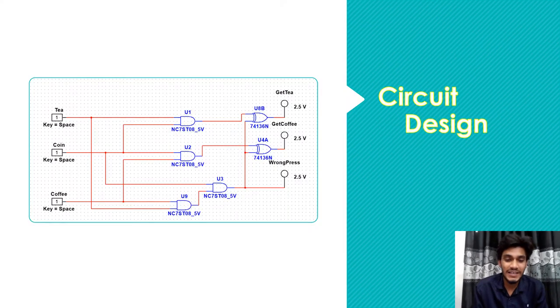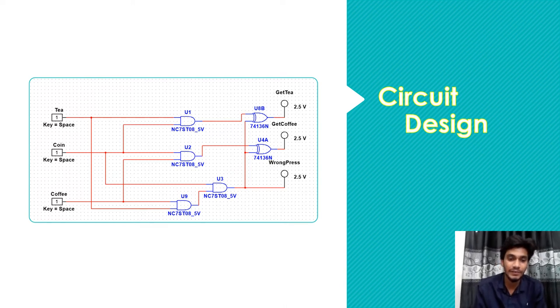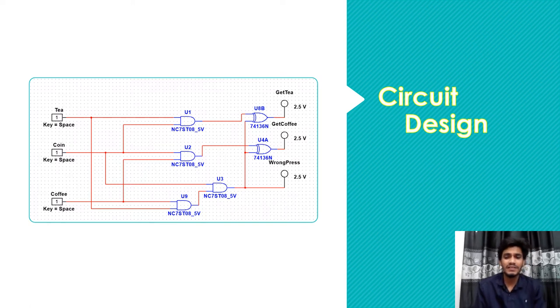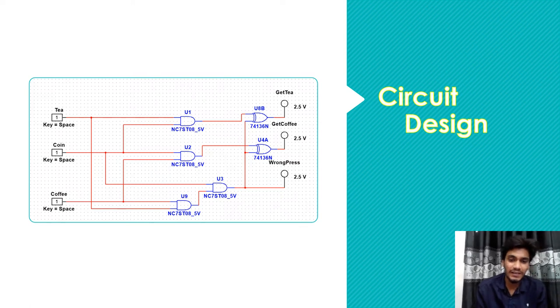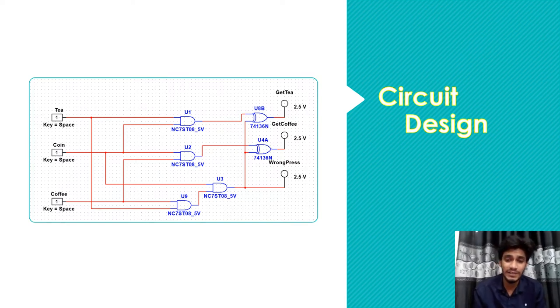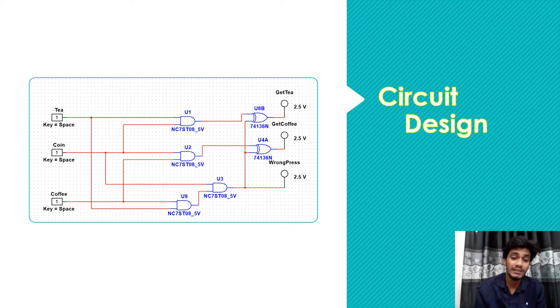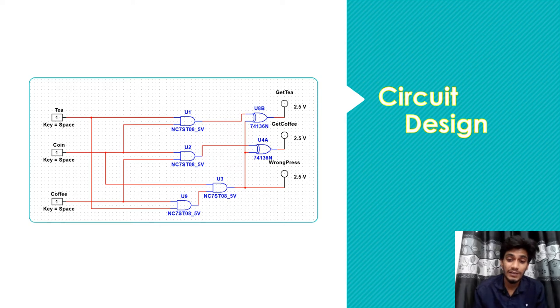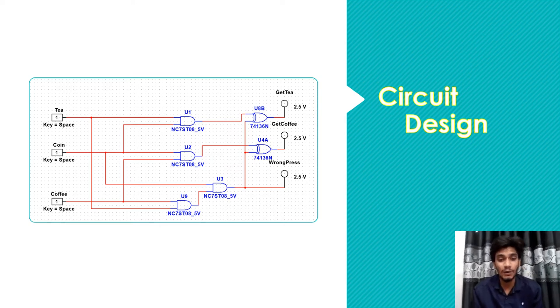I am Yamatur Hussain Al Amin and now I will describe the circuit design. Here is the main working circuit design of our required tea or coffee vending machine. To build this circuit properly, we use four AND gates and two XOR gates. In the next slide, we'll describe the working principle in detail by simulating the circuit according to the given inputs, and we'll see which output will show according to our inputs.